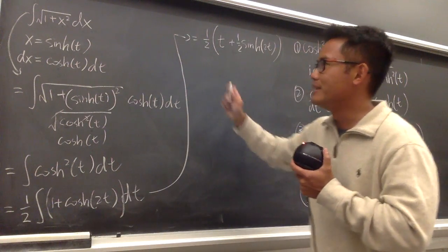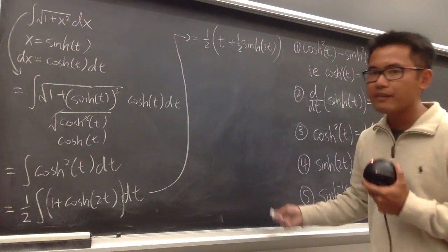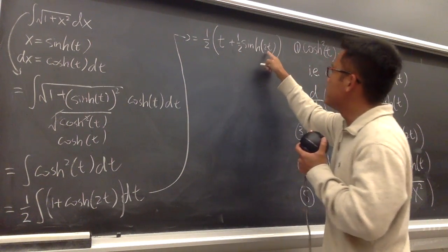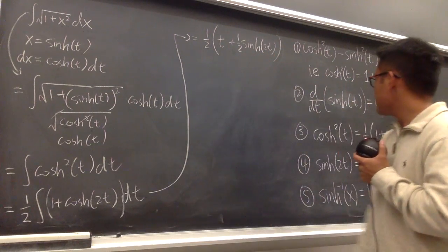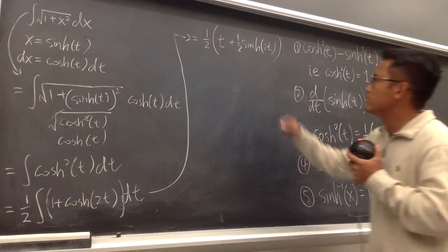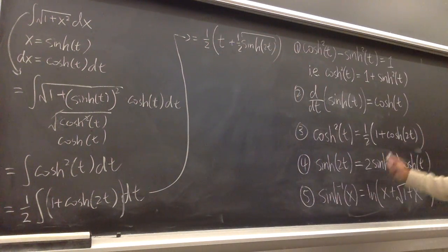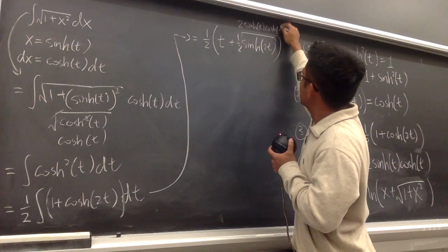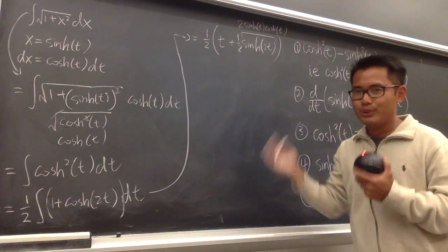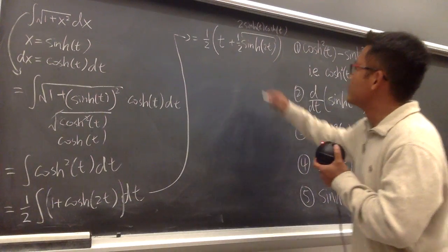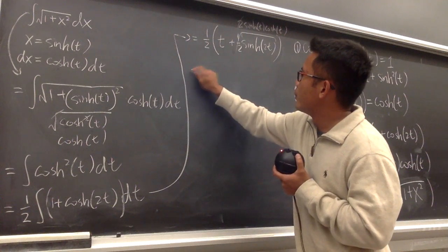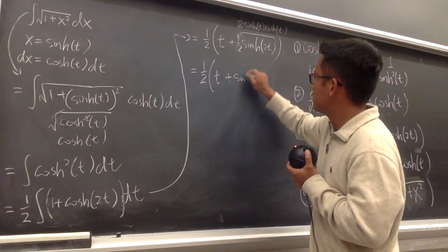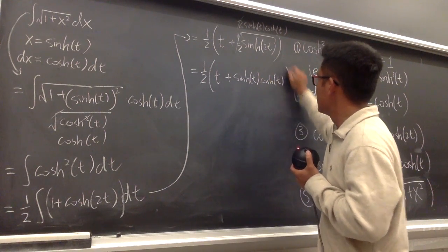Our goal is to get back to the x world. To handle sinh(2t), we use the identity sinh(2t) equals 2·sinh(t)·cosh(t). The 2 and the 1/2 cancel, so the expression simplifies to 1/2 times the quantity t plus sinh(t)·cosh(t).